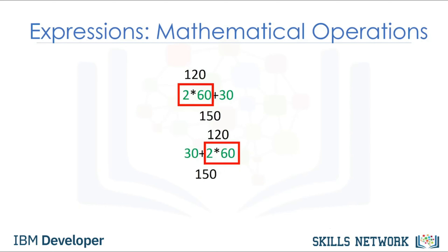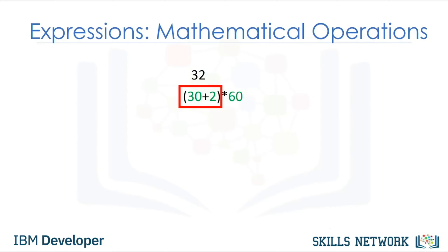There are a lot more operations you can do with Python — check the labs for more examples. We will also be covering more complex operations throughout the course. The expressions in the parentheses are performed first. We then multiply the result by 60. The result is 1920.